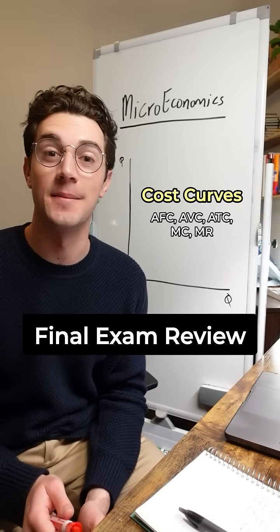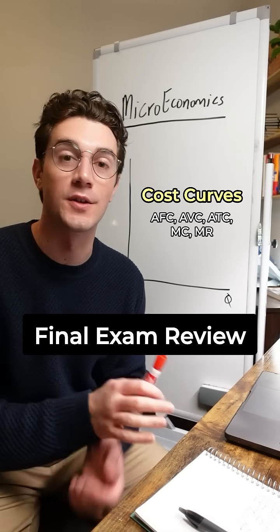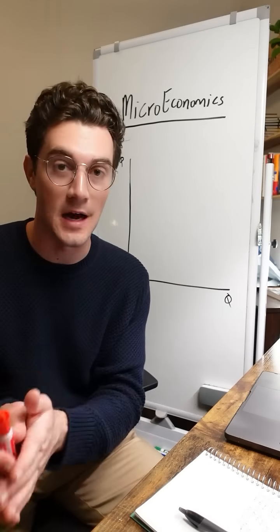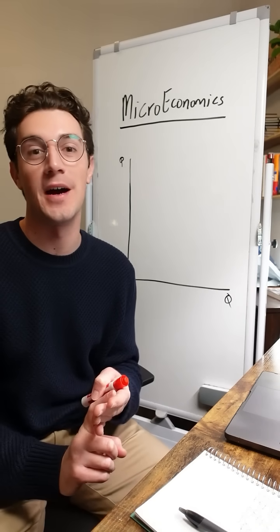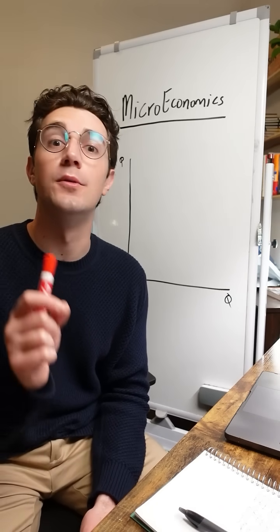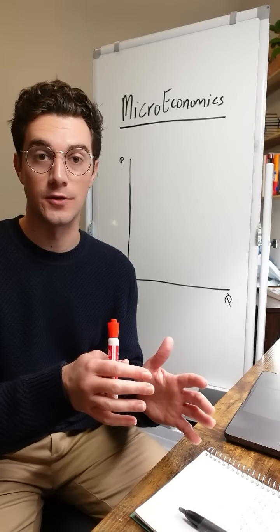If you've got your microeconomics final exam coming up, this is how you draw the cost curves for perfect competition versus monopoly. We're going to go over ATC, AVC, AFC, marginal cost, and how the marginal revenue curve differs between the two market structures.